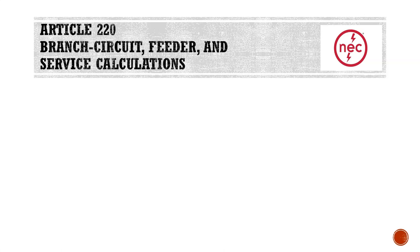Once again, we're going to be in Article 220 — Branch, Circuit, Feeder, and Service Calculations. Article 220 is always where we're going to be going whenever we're trying to calculate any type of service size. It's easy to get Article 220 and 230 confused, because 230 covers services. We have to keep in mind that 230 has general service requirements, such as vertical clearance heights and the number of service disconnect means, whereas 220 is about calculations — in other words, sizing.